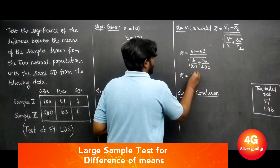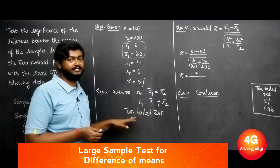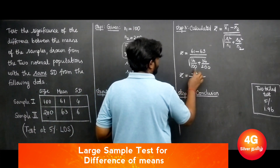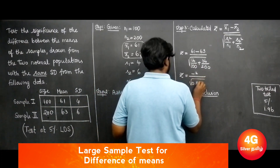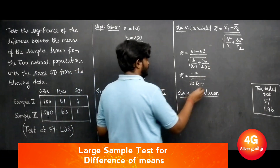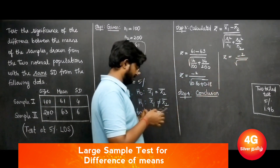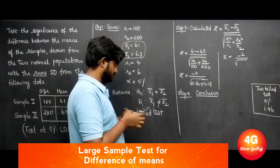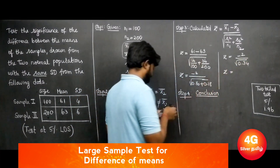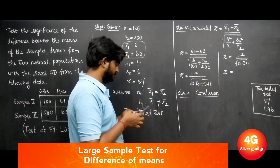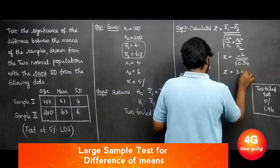The numerator is 61 − 63 = −2. Since this is a 2-tailed test, we take the positive value: |−2| = 2. The denominator is the square root of (16/100 + 36/200) = square root of (0.16 + 0.18) = square root of 0.34 ≈ 0.583. Therefore, Z = 2 / 0.583 ≈ 3.4305.